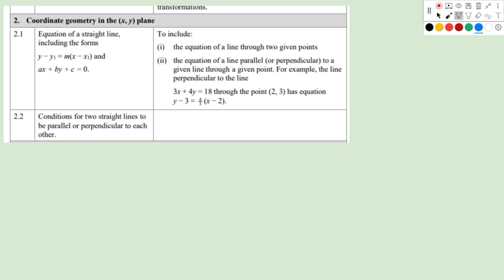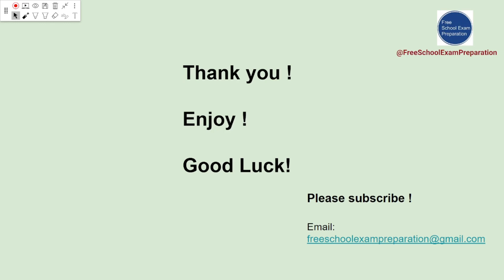Let's take a look at the syllabus for Unit 2. Section 2.1 covers the equation of a straight line including the slope-intercept form and the point-slope form, equations of lines through two given points, and equations of lines parallel to a given line. We haven't covered the parallel lines topic yet — we'll leave that and section 2.2 for the next lecture. That's everything for this lecture. We hope you enjoyed it and wish you good luck with your exam. Please subscribe to our YouTube channel, Free School Exam Preparation. Thank you.